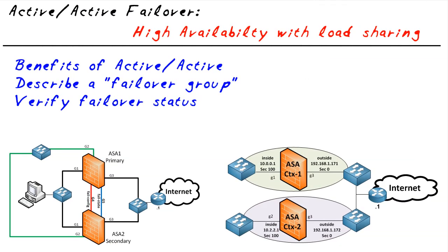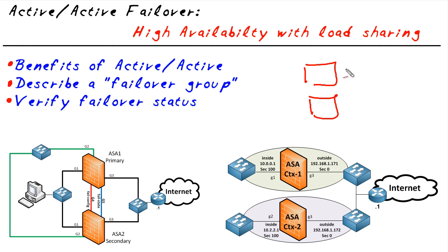In this nugget, we get to take a moment and look at the benefits of active/active failover on a Cisco ASA firewall, including how we use failover groups to accomplish this and also verify the failover status at the command line interface. Let's start at the beginning. If we want failover in our network, it's going to require two — two of everything that we want to have redundant. In the case of firewalls, we're going to have two physical firewalls. Traditionally, we'd call one the active and the other would be standby.